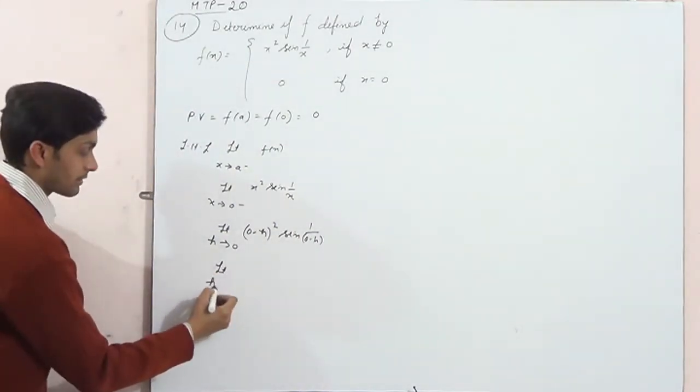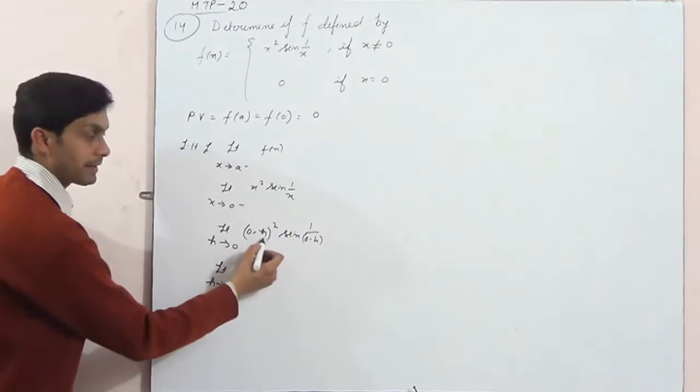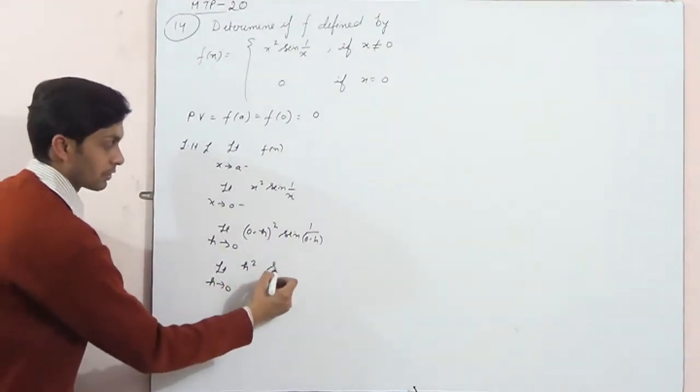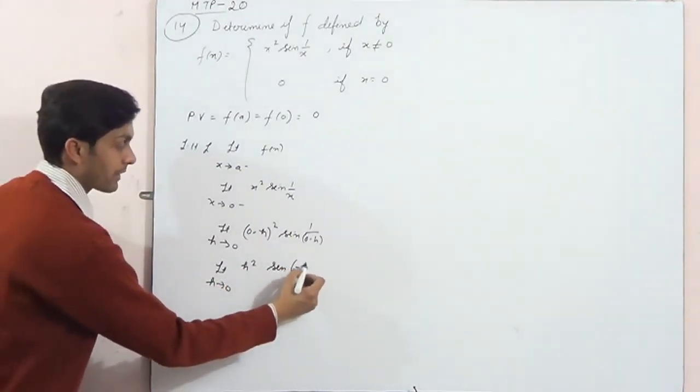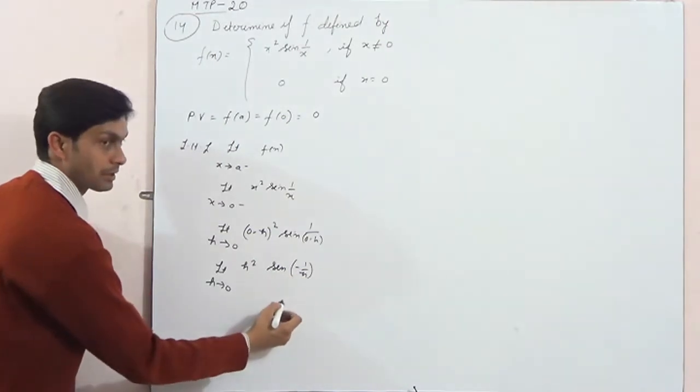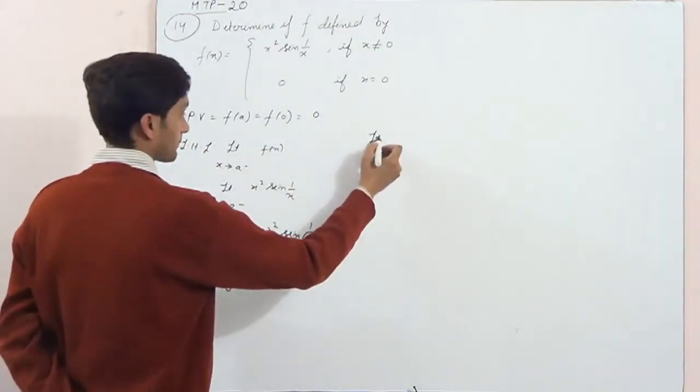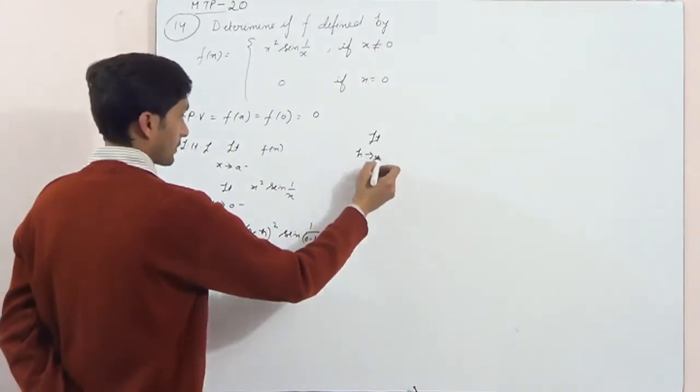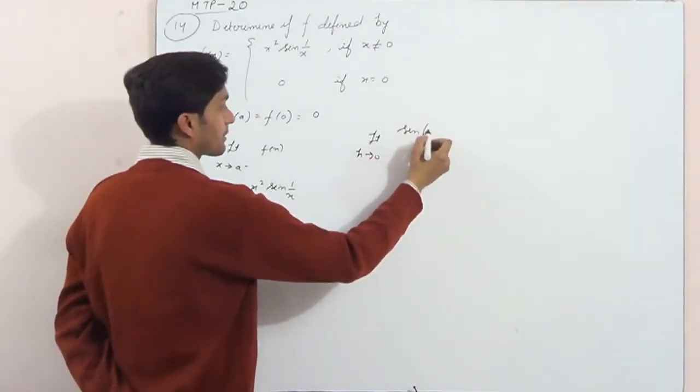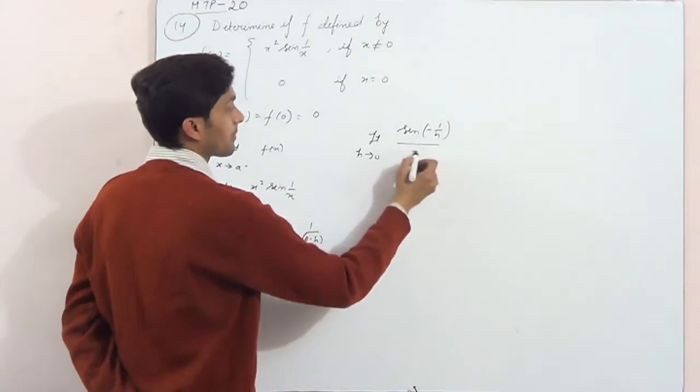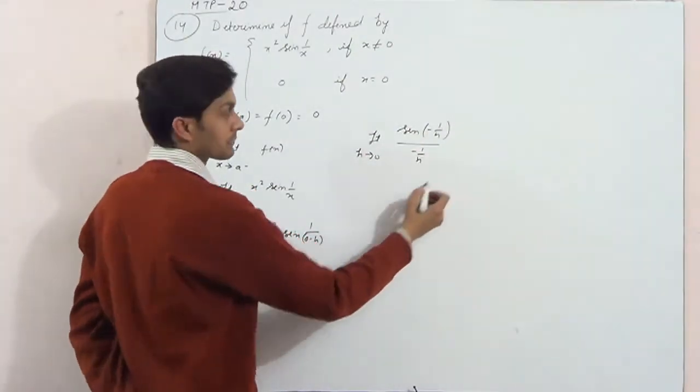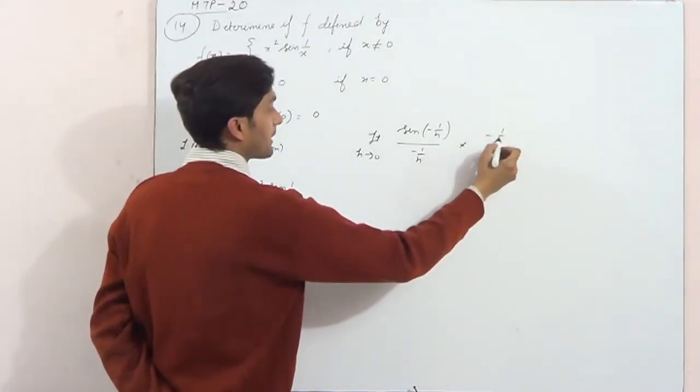Limit h tends to 0, 0 minus h is h square and sine 1 by minus 1 by h. Now sine 1 by h, sine minus 1 by h... so into minus 1 by h.